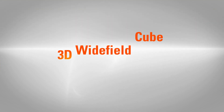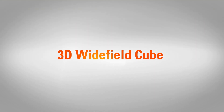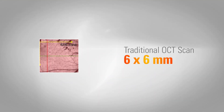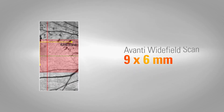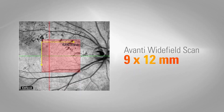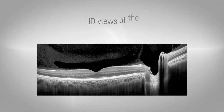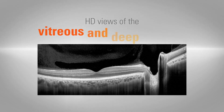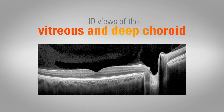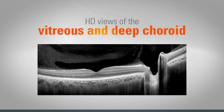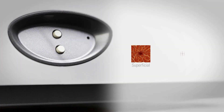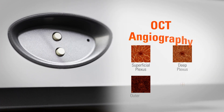Avanti's 9x12mm 3D cube gives you new information on structures outside the traditional 6x6mm cube, while providing high-definition views of the vitreous and deep choroid.